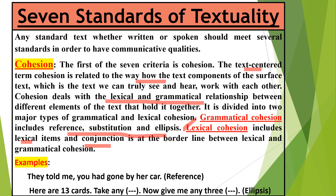To give you an example: 'They told me you had gone by her car.' Here we have used certain references — pronouns, pro-forms, or pro-modifiers — as cohesive devices. Another example: 'Here are 13 cards, take any three. Now give me any three cards.' Here certain words are dropped to avoid repetition, and this cohesive device is called ellipsis. You can learn more by watching our video on devices of cohesion.